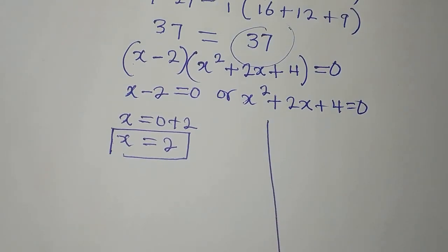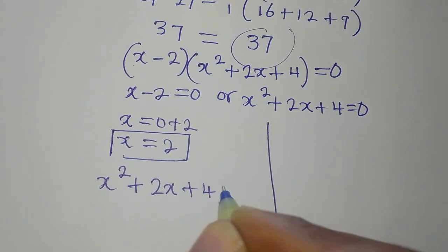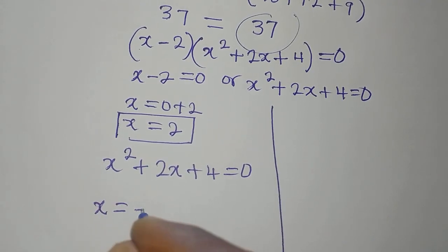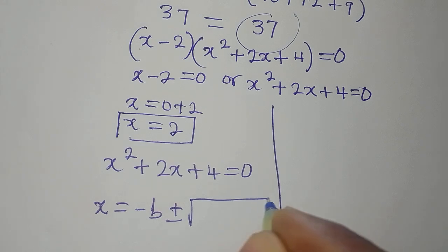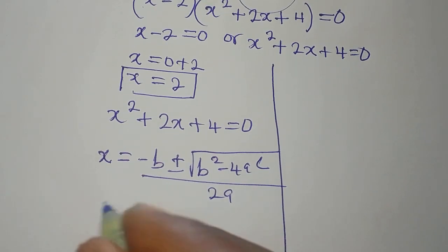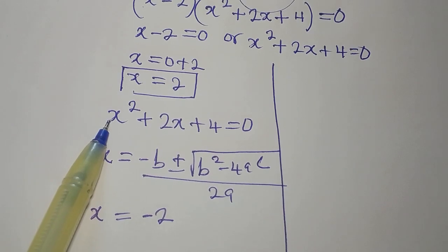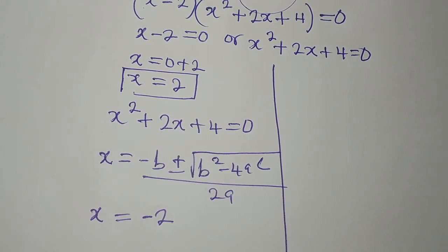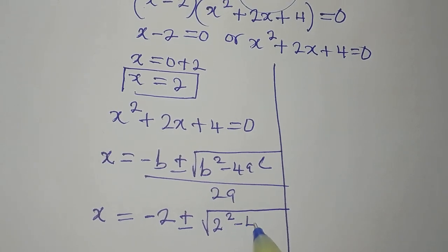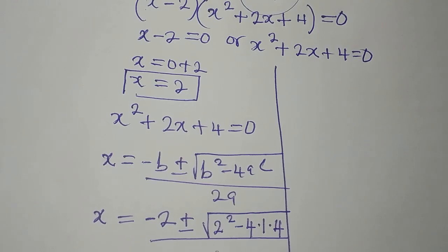To get the other solutions, we pick the quadratic equation x squared plus 2x plus 4 equals 0, and use the quadratic formula. The formula says x equals minus b plus or minus the square root of b squared minus 4ac, all over 2a. Here a is 1, b is 2, and c is 4. So x equals minus 2 plus or minus the square root of 2 squared minus 4 times 1 times 4, divided by 2 times 1.